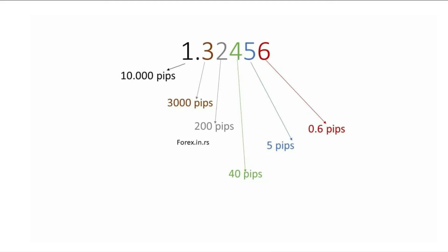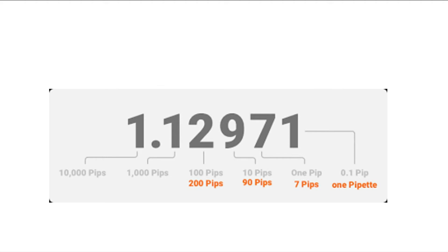For example, for the price 1.32456: the 6 is a point — not a pip, it's 0.6 pips. The 5 is 5 pips. The 4 is 40 pips. The 2 is 200 pips. The 3 is 3,000 pips. And the 1 is 10,000 pips. Similarly, for a price like 0.12971, you have 0.1 pips, 7 pips, 90 pips, 200 pips, 1,000 pips, and 10,000 pips.